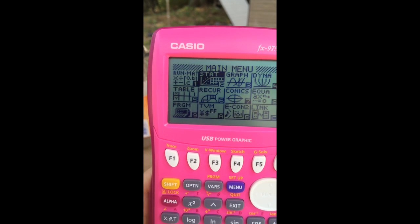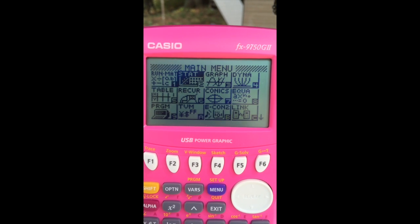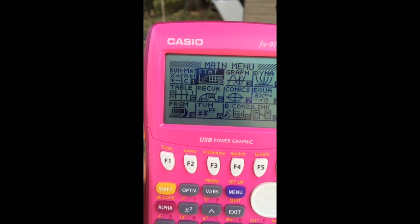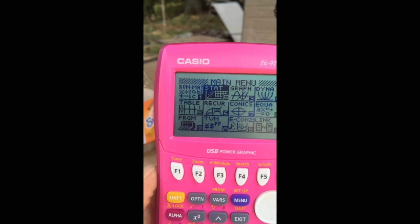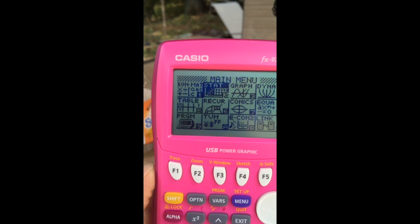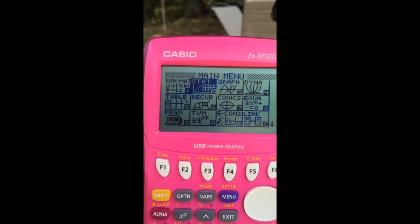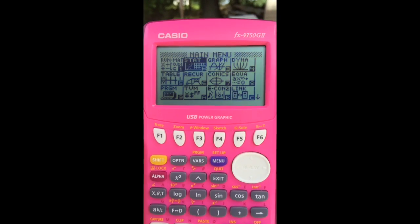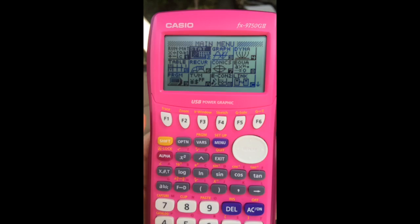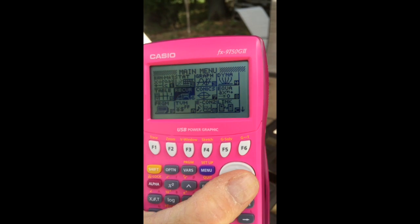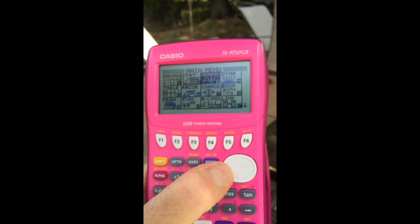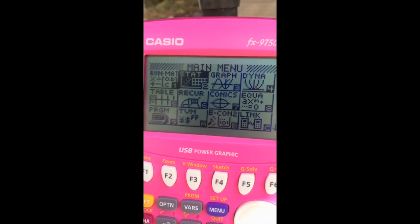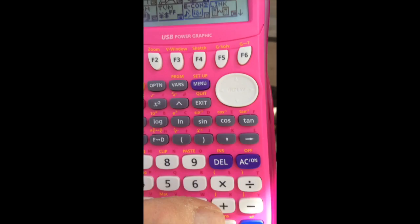When we turn the machine on, we see our main menu with all these various icons for different choices for our calculator. This calculator can really do a lot. Notice we're positioned on STAT. Now, if we were not there, we would use this dial to navigate the screen. And once I'm on STAT, then I just hit Execute.